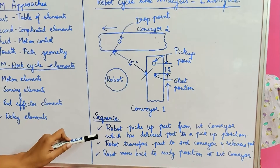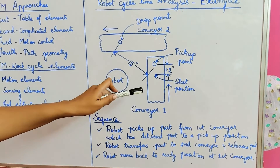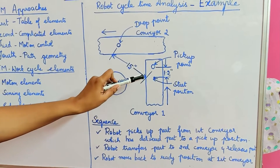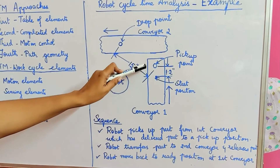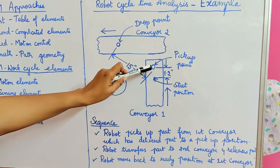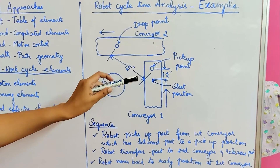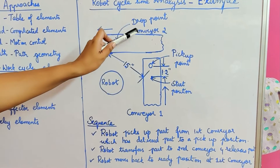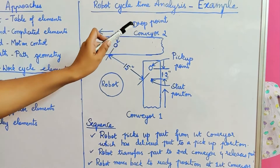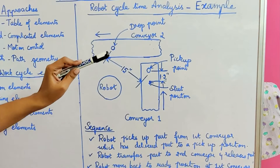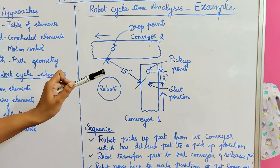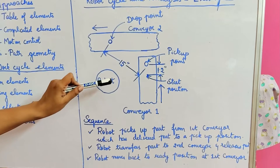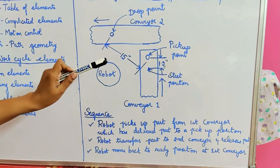The sequence is as follows: first, the robot picks up the part from the first conveyor, which has delivered the part to a known pickup position. Second, the robot transfers the part to the second conveyor and releases the part. Third, the robot moves back to the ready position at the first conveyor.